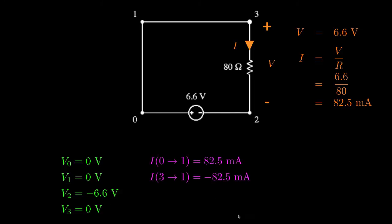Now for this single-loop circuit, there's only one current, which we've established has a value of 82.5 milliamps. We do though need to be careful about the sign — positive or negative — for the current. The current flowing from node 0 to node 1, for instance, has a value of positive 82.5 milliamps. The current flowing from node 3 to node 1 has a value of negative 82.5 milliamps.